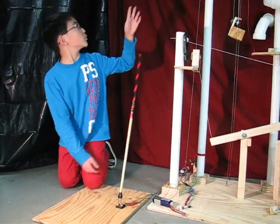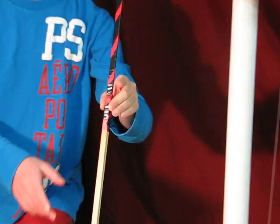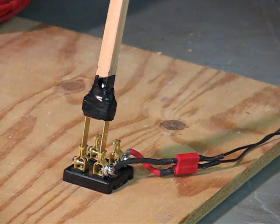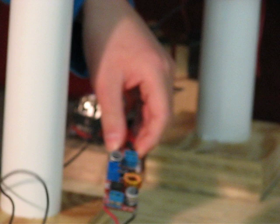At the beginning of our Rube Goldberg machine, we pull this lever to turn on our motor, which will be powered by this battery through this speed control to our motor.